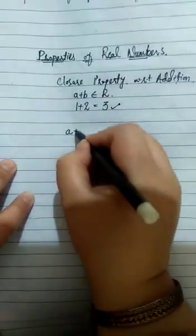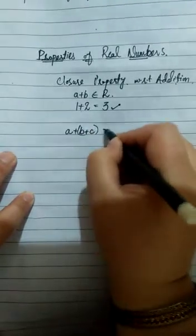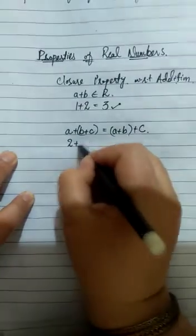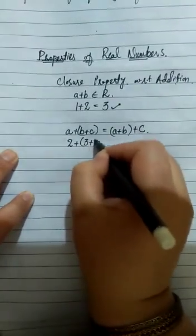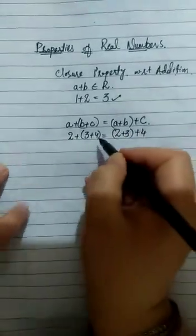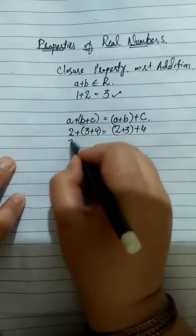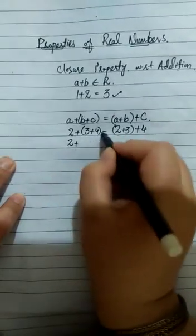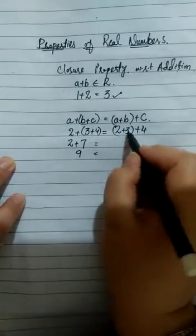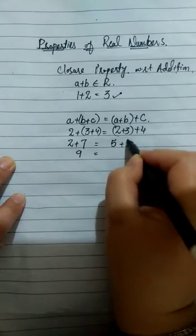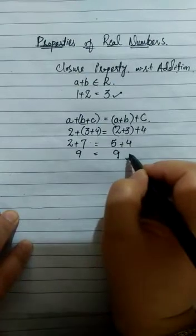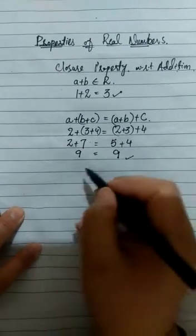Then we discussed the associative property with respect to addition, which states that (a + b) + c = a + (b + c). For example, (2 + 3) + 4: left-hand side gives 2 + 7 = 9; right-hand side gives 5 + 4 = 9. So 9 = 9, which is true.